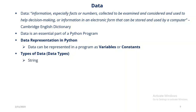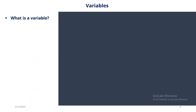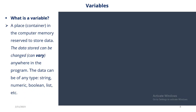What is a variable? A variable is a place or container in the computer memory reserved to store data. It is called a variable because the data stored can change — it can vary with time, anywhere within the program. Data can also be of any type: it could be a string, it could be numeric, it could be boolean, et cetera.